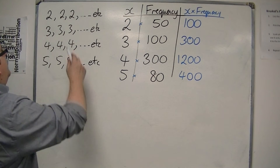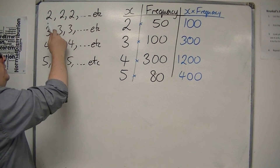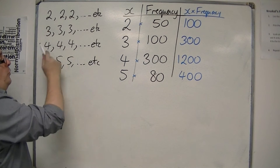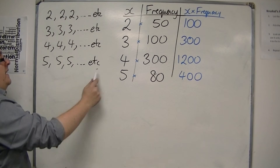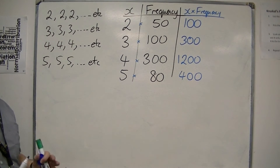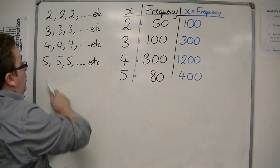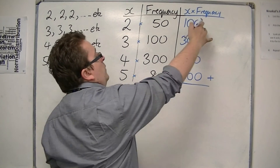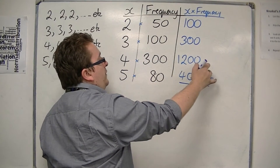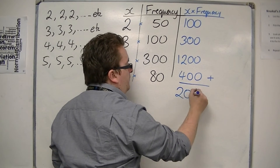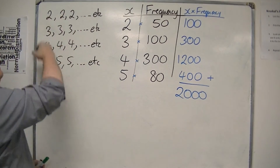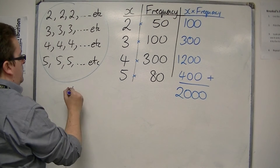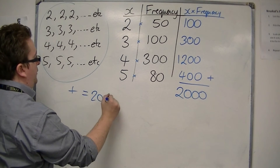Then I've got three hundred fours which would add up to one thousand two hundred, and then eighty fives which would add up to four hundred. So I've added up all the twos — got a hundred; all the threes — got three hundred; all the fours — got one thousand two hundred; all the fives — got four hundred. If I then add up all of those numbers together, that's two thousand. So all of the numbers together add up to two thousand.